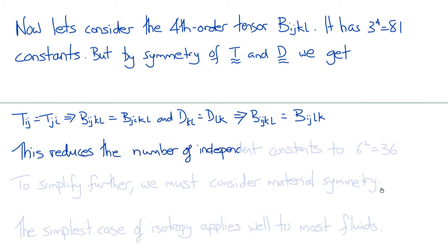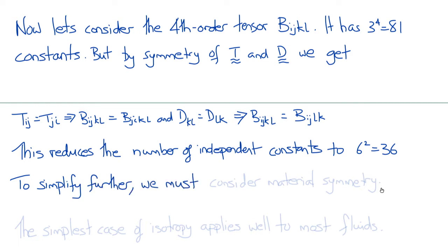Think of that 36 as being 6 squared: there are 6 different components of the symmetric stress tensor and 6 different components of the symmetric rate of deformation tensor, so there must be 6 by 6 independent coefficients.